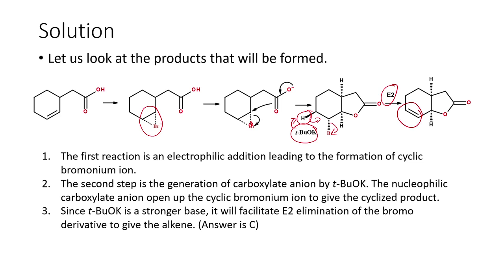This is very similar to the previous case — both hydrogen atoms are in the cis orientation — with the additional feature that an alkene (double bond) is formed. The answer is C.